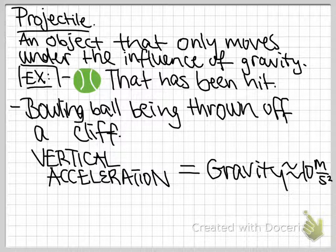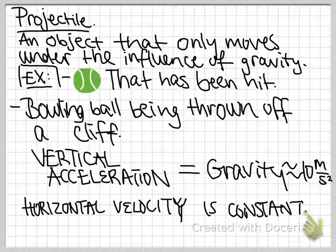So for projectiles, since they only move under the influence of gravity, their vertical acceleration equals gravity, which is about 10 meters per second squared, and their horizontal velocity is constant, so their horizontal acceleration equals zero.